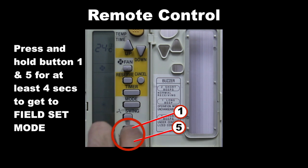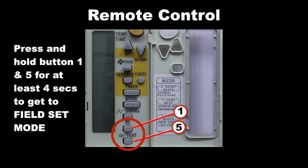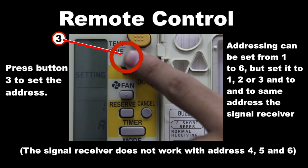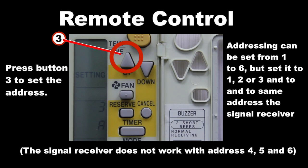Press and hold button 1 and 5 for at least 4 seconds to get to field set mode. Press button 3 to set the address. Addressing can be set from 1 to 6, but set it to 1, 2, or 3 and to the same address as the Signal Receiver.